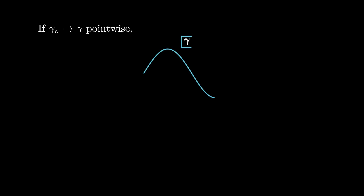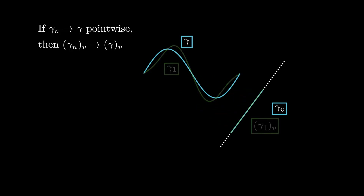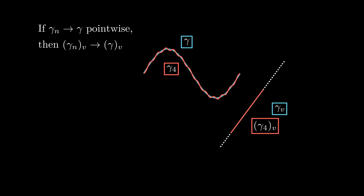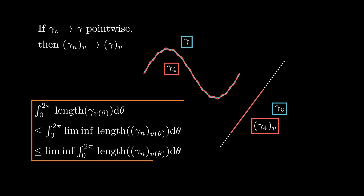The last property is slightly more delicate. If we have a sequence of curves gamma_n converging pointwise to a curve gamma, when we project onto a certain direction, the sequence of projections converges to the projection of gamma. Then, by the lower semi-continuity property, the integral of the lengths of the projections of gamma is less than or equal to the integral of the limit of the lengths of the projections of the curves gamma_n. Since these integrands are non-negative, we can apply Fatou's lemma to conclude that such integral is less than or equal to the limit of the corresponding integrals. This shows that lambda satisfies the lower semi-continuity property.